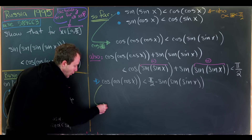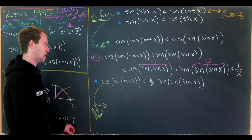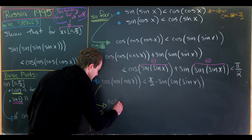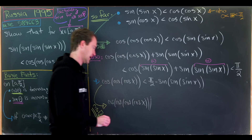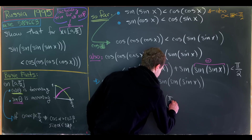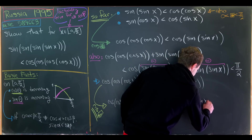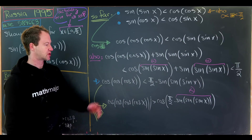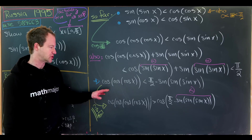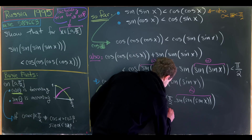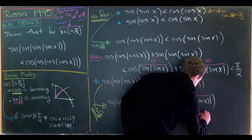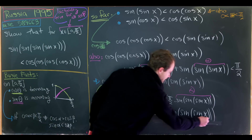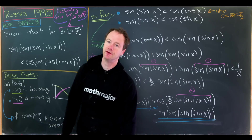Finally, we apply cosine one more time. Since cosine is decreasing on the appropriate interval, cos(cos(cos(cos(x)))) > cos(π/2 − sin(sin(sin(x)))). Using the co-function identity cos(π/2 − θ) = sin(θ) with θ = sin(sin(sin(x))), the right side becomes sin(sin(sin(sin(x)))). Therefore cos(cos(cos(cos(x)))) > sin(sin(sin(sin(x)))), which is exactly what we wanted to prove.